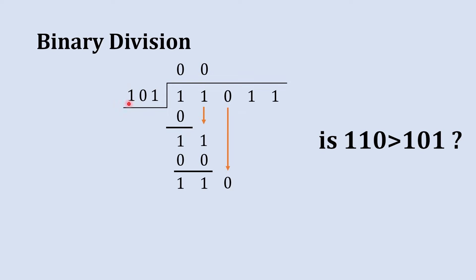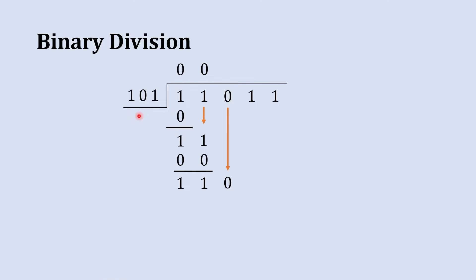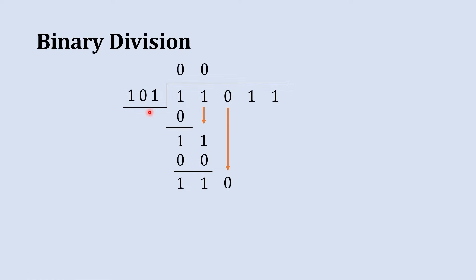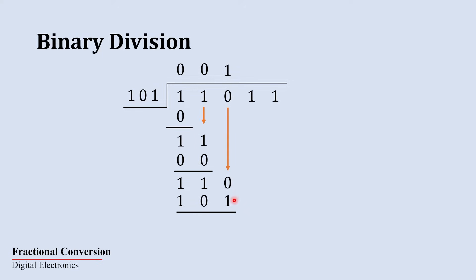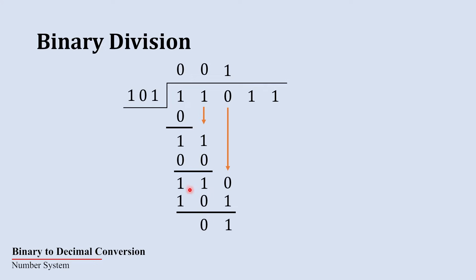Now check: is 110 greater than the divisor 101? Yes it is. In binary we can only multiply the divisor by 0 or by 1. Since it is possible to divide, write 1 in the quotient and write the divisor 101 below. Subtract: we cannot subtract 1 from 0, so we ask for a borrow. After borrowing, 10 minus 1 gives 1.